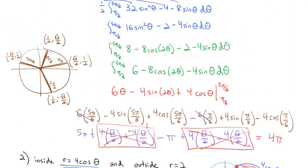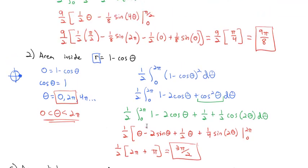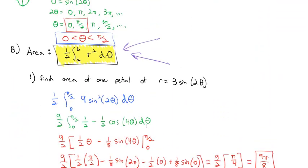Now it's your turn to try some of these on the homework assignment to practice and get really good. The key formula we've been using throughout is that the area in polar coordinates is 1/2 times the integral from a to b of the radius squared dθ. Try a few of these and we'll look at them more in class.